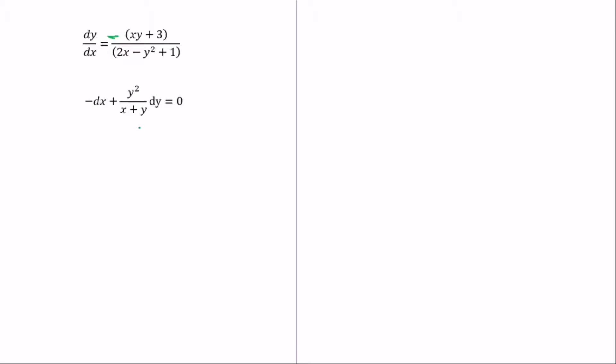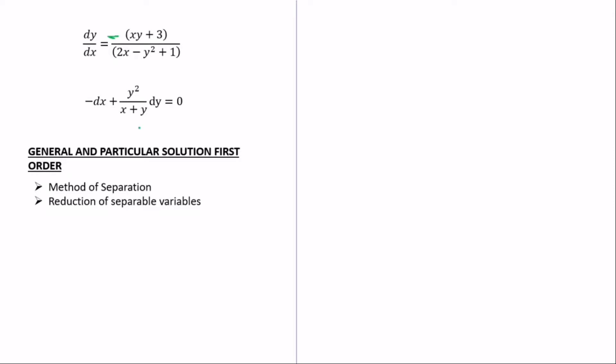Now we have the general and particular solution of first-order differential equations. It comes in two ways: the method of separation of variables and the reduction of separable variables. With the method of separation, the key rule is that y must go with dy and x must go with dx, so you separate the variables onto their respective sides.